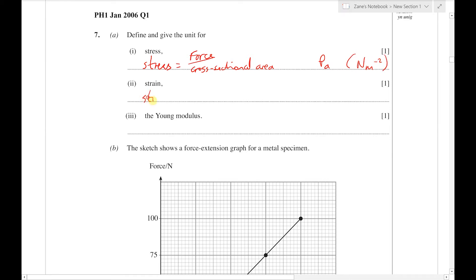Strain is defined as the extension compared to the original length. Because it's a ratio of two lengths, whatever the lengths are measured in, those units will cancel, so there's no units. It's best here to actually state 'no units' rather than leave it blank, because that could be read by the examiner as you didn't know what the unit was.